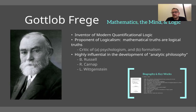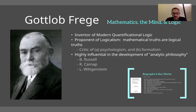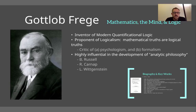Frege is also a critic of psychologism — the view that the laws of mathematics and logic are ultimately derivative of psychological laws or psychological structures. He's also a critic of mathematical formalism. You can go to the Stanford Encyclopedia of Philosophy to learn more about that. Frege was also highly influential in the development of analytic philosophy. Some of the major figures within that camp include Bertrand Russell, Rudolf Carnap, and of course Ludwig Wittgenstein, along with many other analytic thinkers today.